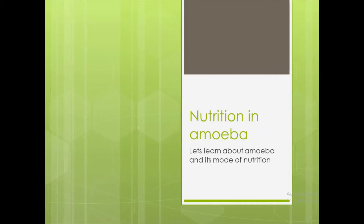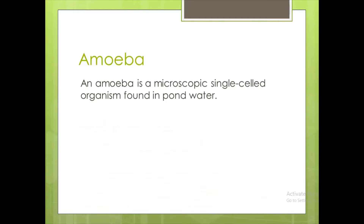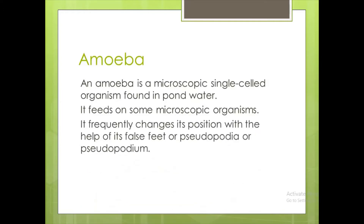Nutrition in amoeba. Let's learn about amoeba and its mode of nutrition. An amoeba is a microscopic single-celled organism found in pond water. It feeds on some microscopic organisms. It frequently changes its position with the help of its false feet or pseudopodia.